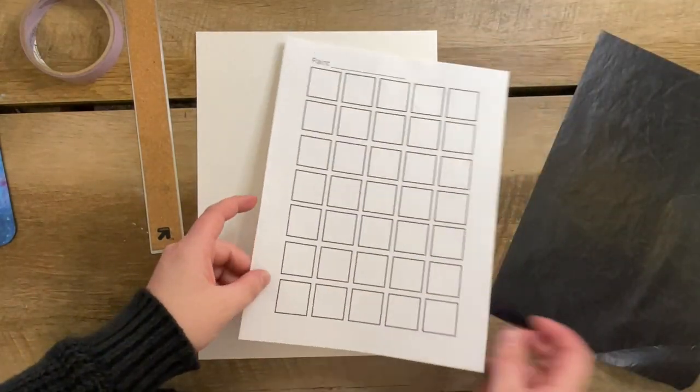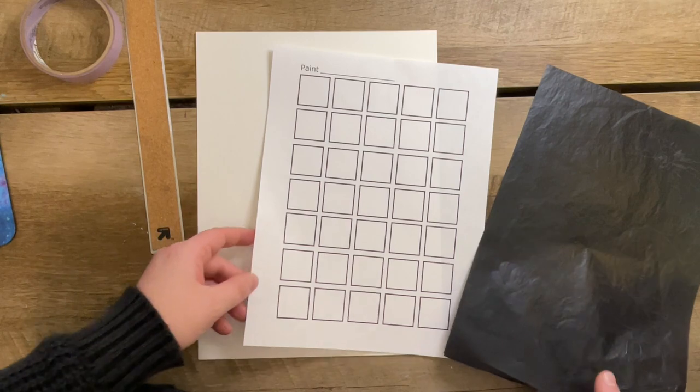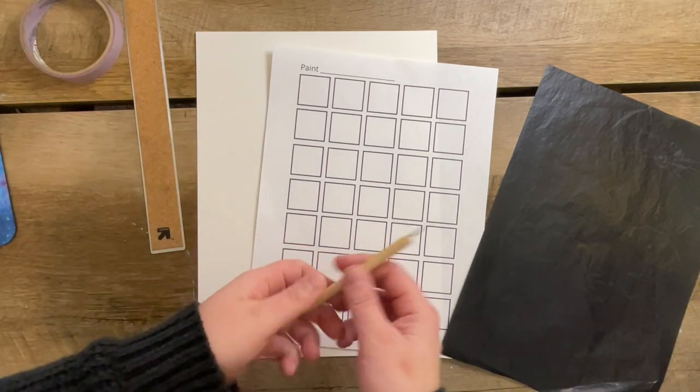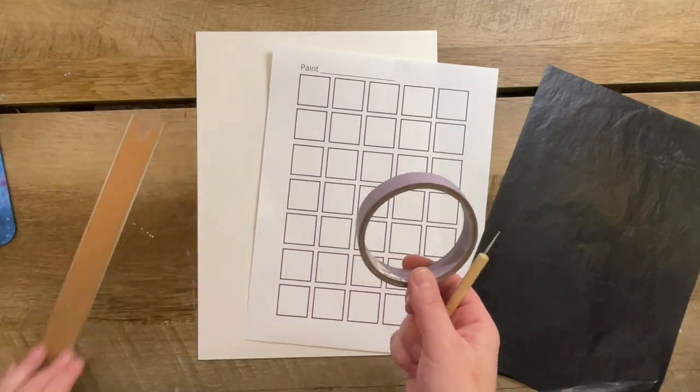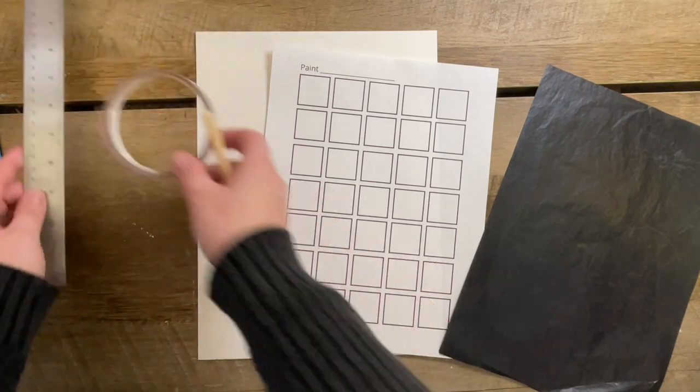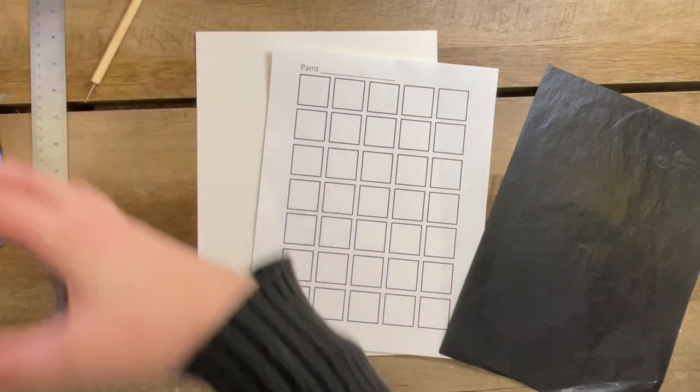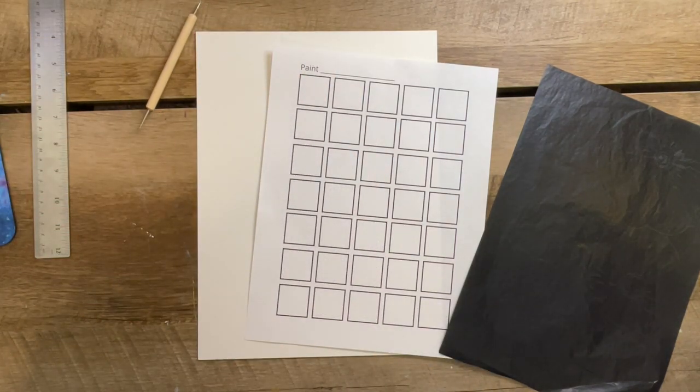Here I have some cold press watercolor paper, the printout of the swatches, carbon paper, a stylus, masking tape, and a ruler for my straight edges. I'm going to start by...